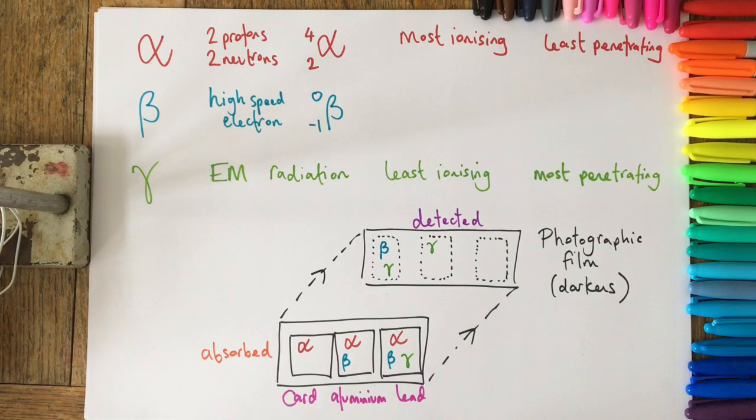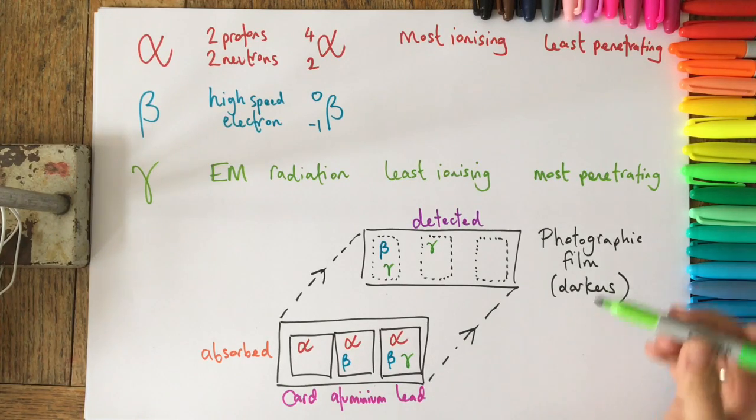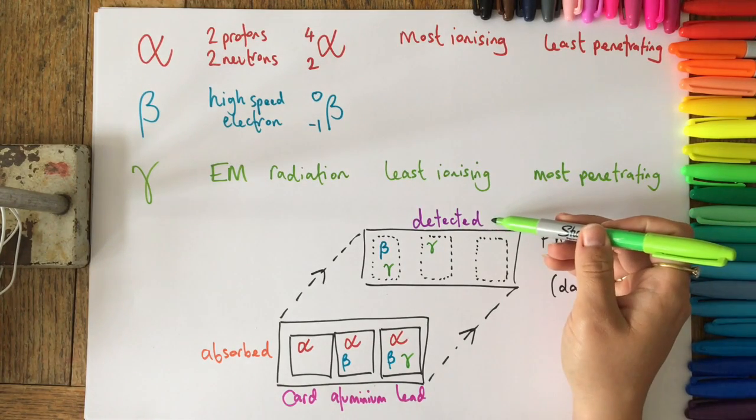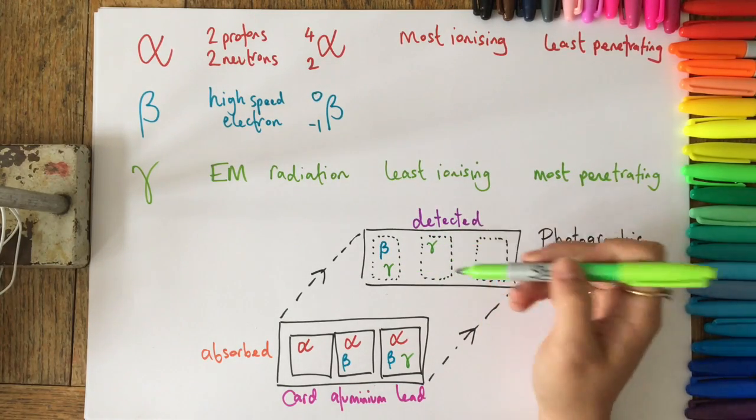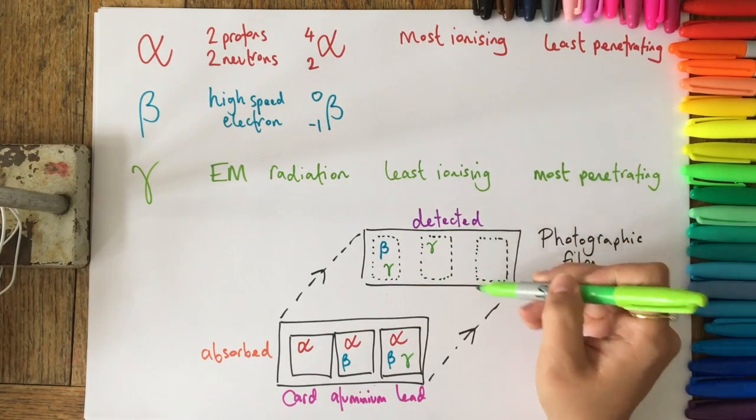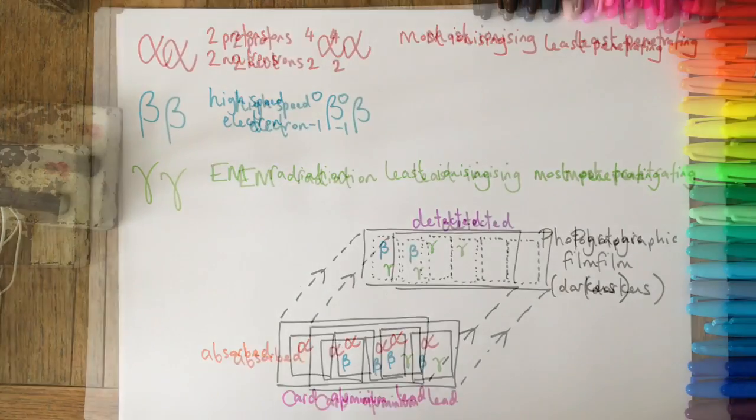Looking at the photographic film at the back, we can see which radiations are detected by the badge. Behind card, we detect beta and gamma, behind aluminum is just gamma, and then behind lead, there shouldn't be anything, and this works as a control.